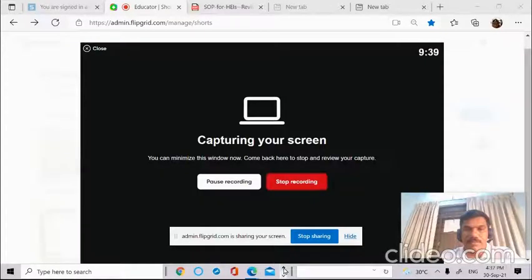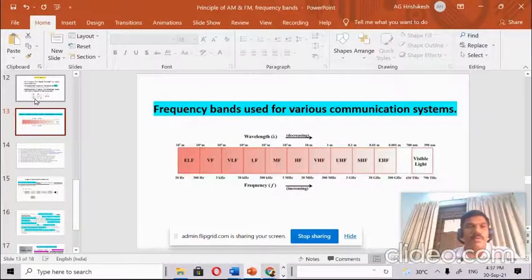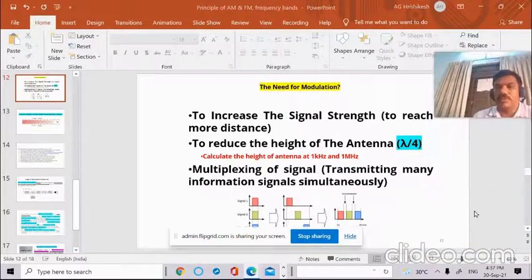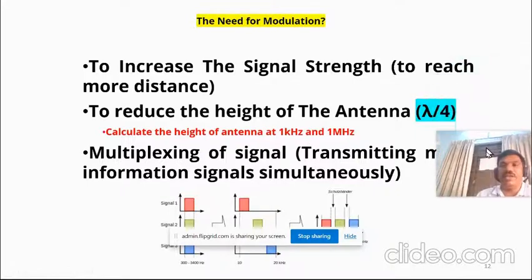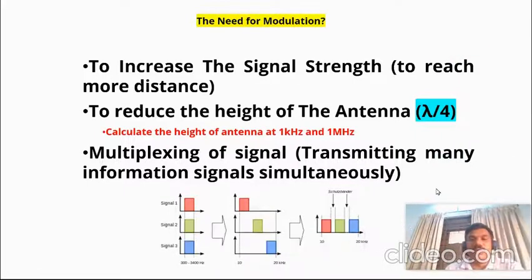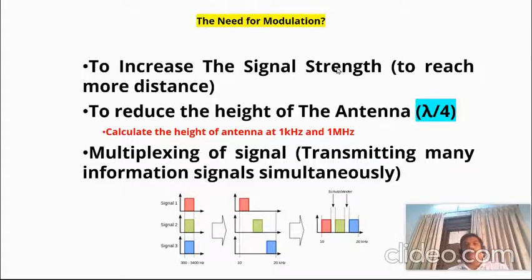In this session we will look into the need for modulation and the various frequency bands used in a communication system. So why do we need modulation? The first reason is to increase the power of the message signal. The power of the message signal is very less because its frequency is very low.